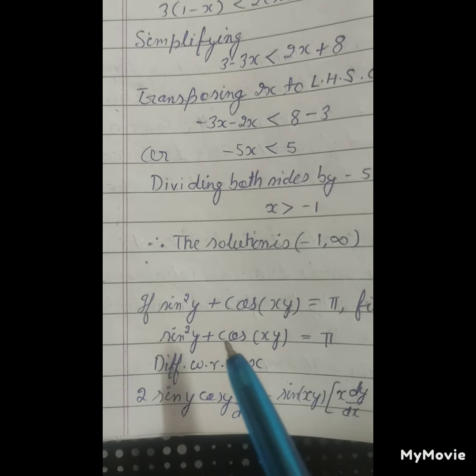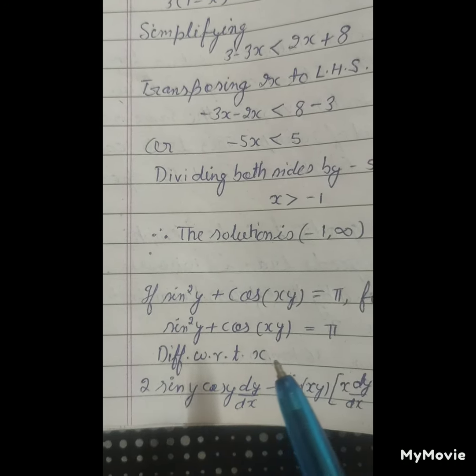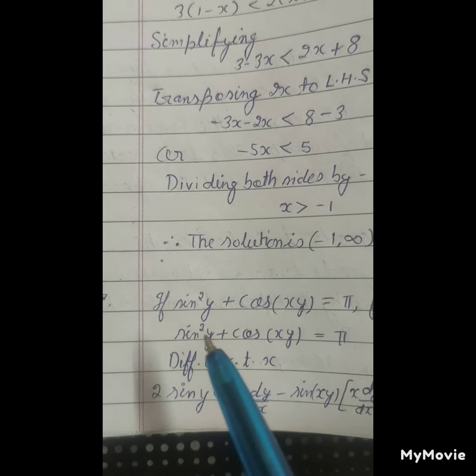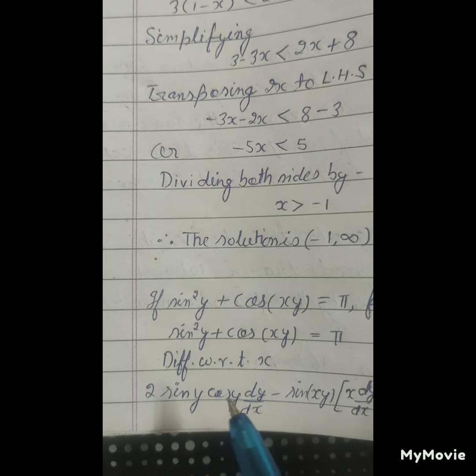Solution: sine square y plus cos of xy equal to pi. Differentiating with respect to x, sine square y is 2 sine y.